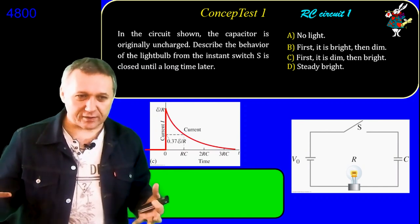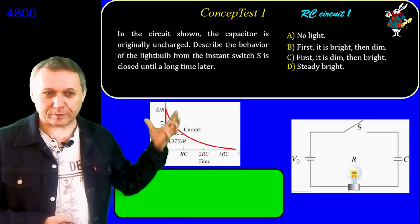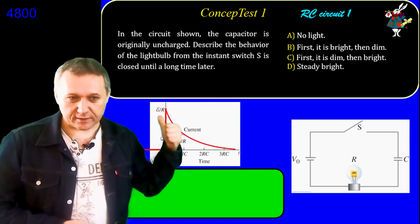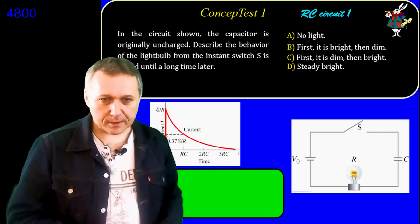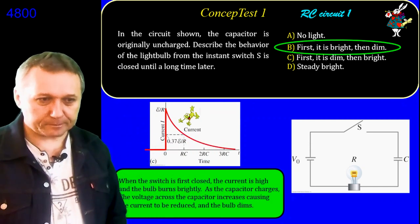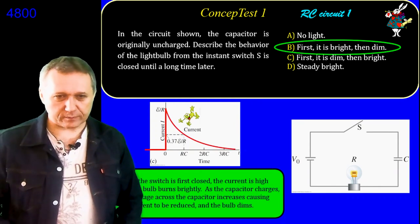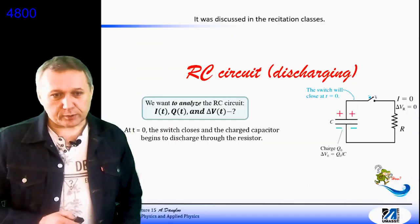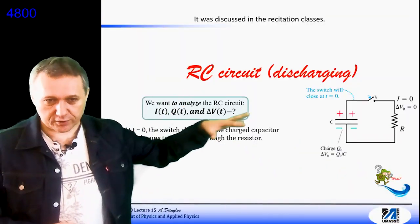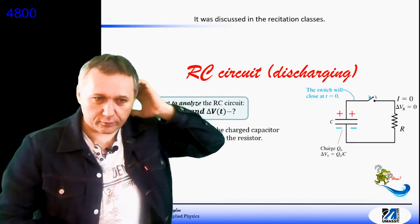Enough about the charging situation. This discharging case was discussed in our recitation classes and we already solved a few problems. For the discharging case, current and charge in the capacitor are connected through a minus sign. The expression for charge is different, and when you differentiate to find current don't forget about the minus. As a result, current still behaves in exactly the same way — exponentially: first large, then it decays.